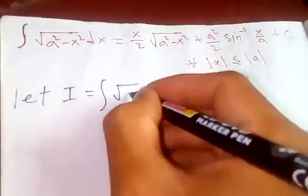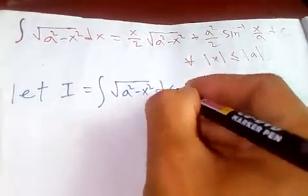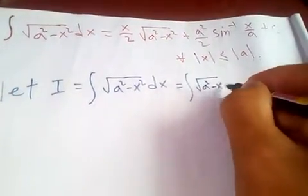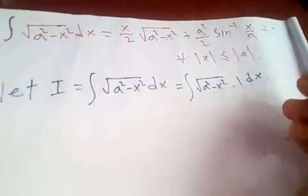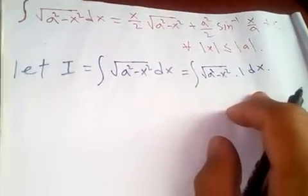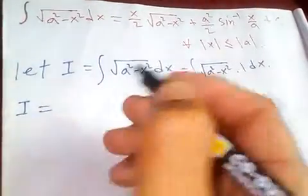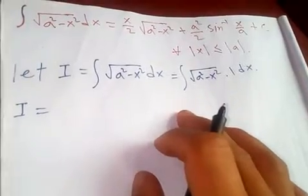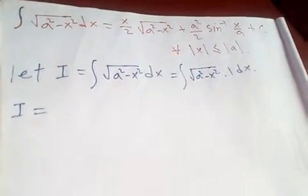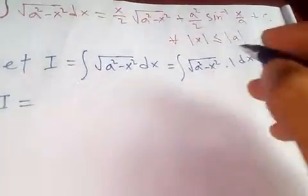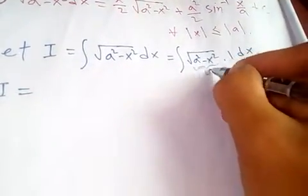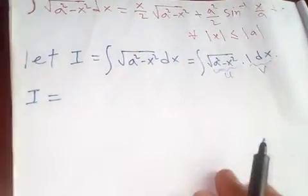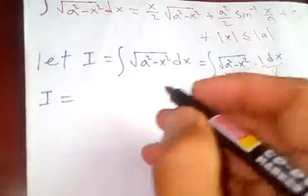I is the integral of √(a² - x²) dx. Let's rewrite it as √(a² - x²) · 1 dx. We are going to use integration by parts, treating √(a² - x²) as the first function and 1 as the second function.